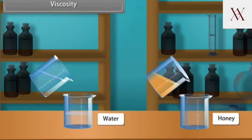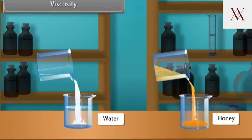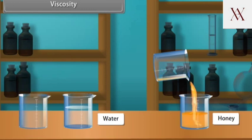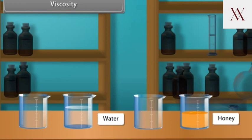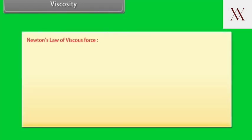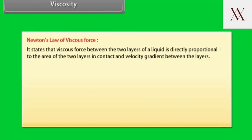Viscosity. It is defined as the property of a liquid by virtue of which an internal resistance comes into play which tries to destroy the relative motion between the layers. This internal resistance acts tangentially on the layers of the liquid. Newton's law of viscous force states that viscous force between two layers of a liquid is directly proportional to the area of the two layers in contact and velocity gradient between the layers.